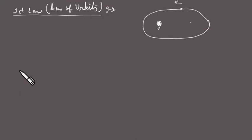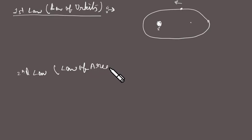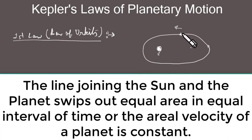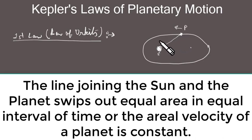Now let's move on to the second law, which is also called the Law of Aerial Velocity. It states that the line joining the Sun and the planet sweeps out equal amounts of area in equal intervals of time. That is why it is also called the aerial law.